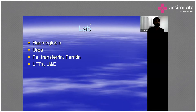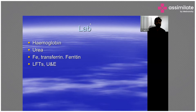The BUN goes up. Iron, ferritin, and transferrin are also important — particularly in chronic anemia with iron deficiency. In iron deficiency, transferrin will be high, transferrin saturation will be low, and ferritin will be low.